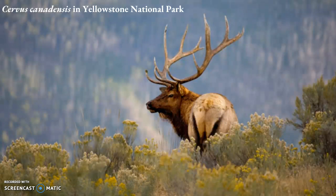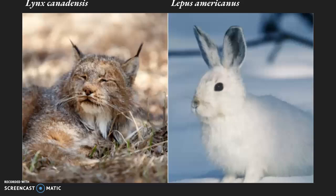Fearing for the decreasing population of Cervus canadensis and other prey of the Canis lupus in the Yellowstone National Park's ecosystem, the federal government offered approximately $50 per wolf killed until 1965 in an attempt to protect the elk population. This led to an exponential growth in the population of elk as they were being targeted by fewer predators. However, this increased population did lead to the overgrazing of plants.